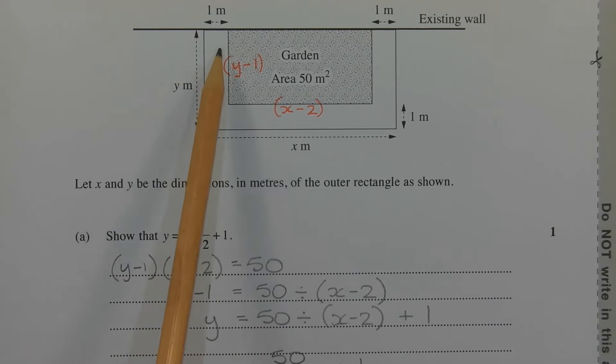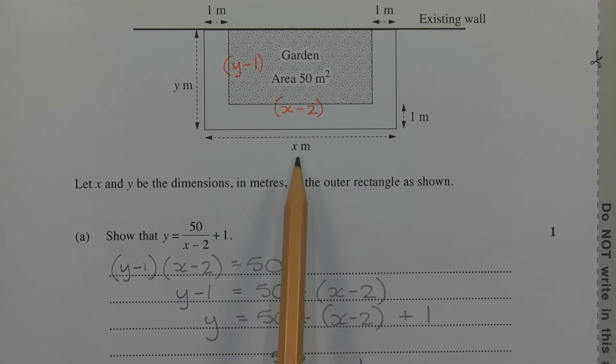Now we know that the width of the concrete path is 1 meter. We know the length of the outer rectangle is x meters. If we take away 1 meter here and 1 meter here, so in other words, taking away 2 meters, that gives us the length of the garden area, which is 2 meters less than x, which is written as x minus 2. The width of the garden area can be found in a similar way. If we take the width of the outer rectangle and subtract 1 meter, we get a width of y minus 1 meters.